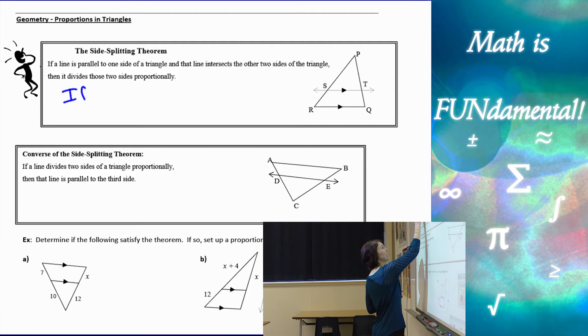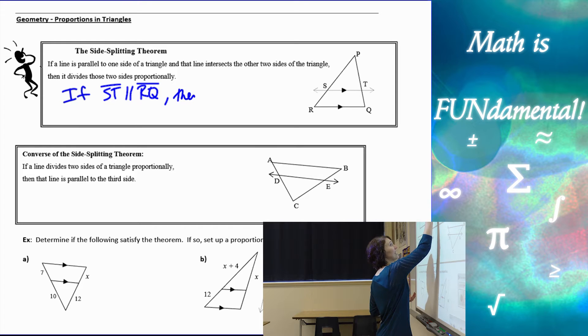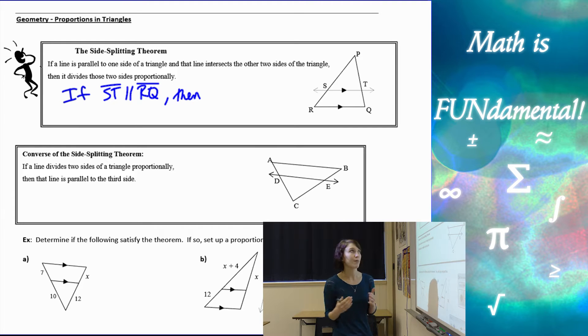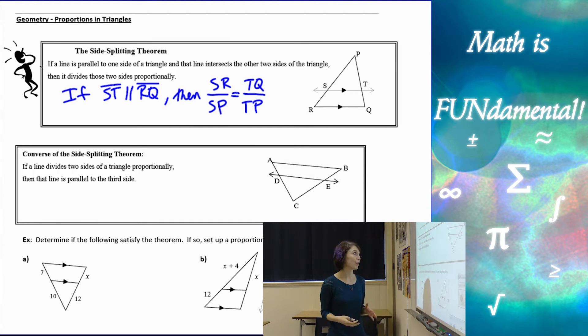So what that looks like is if our side ST was parallel to RQ, we have to have parallel sides, or one line parallel to a side in order for this to work. Then SR over SP has to be equal to TQ over TP, so it divides it up proportionally.